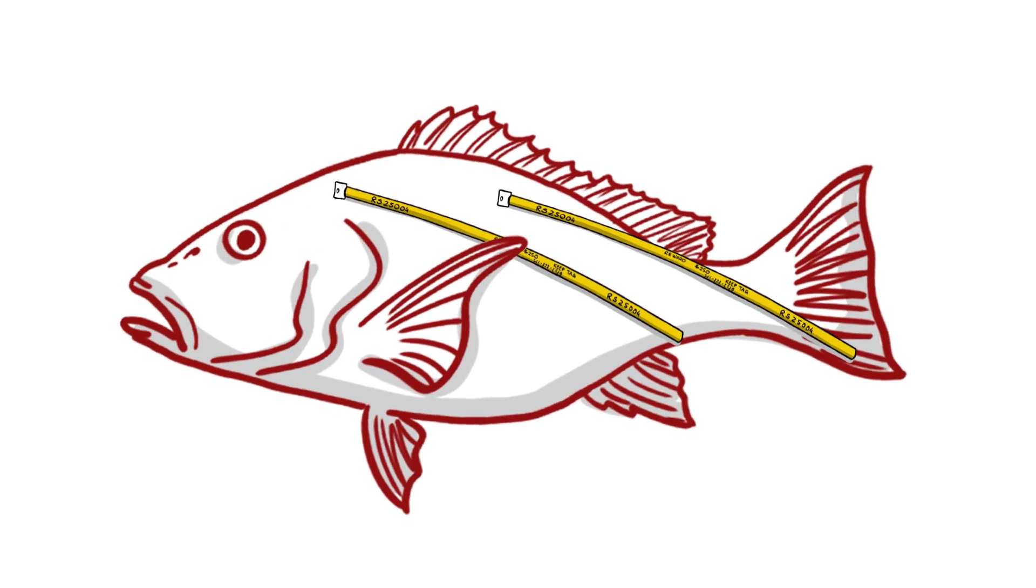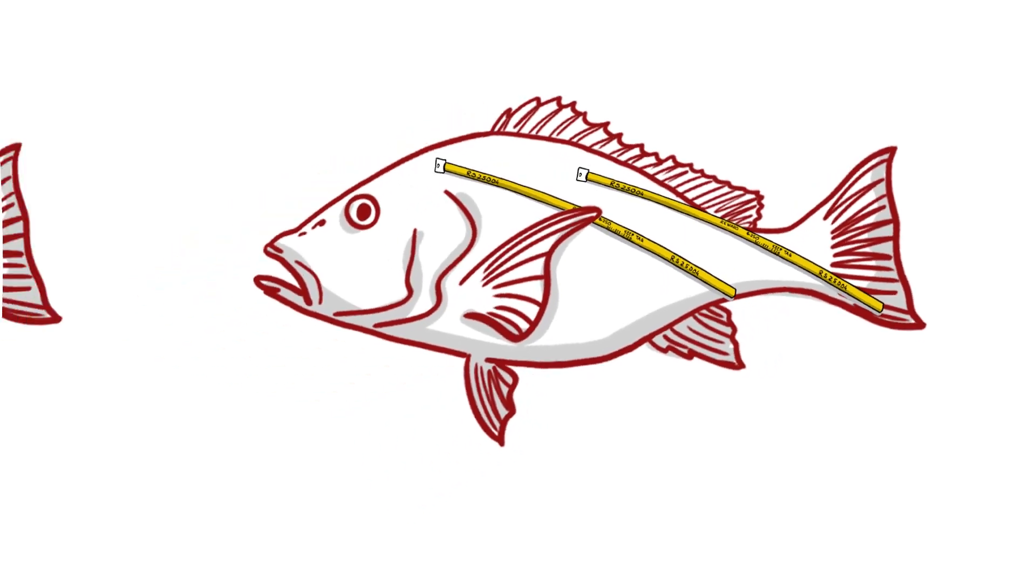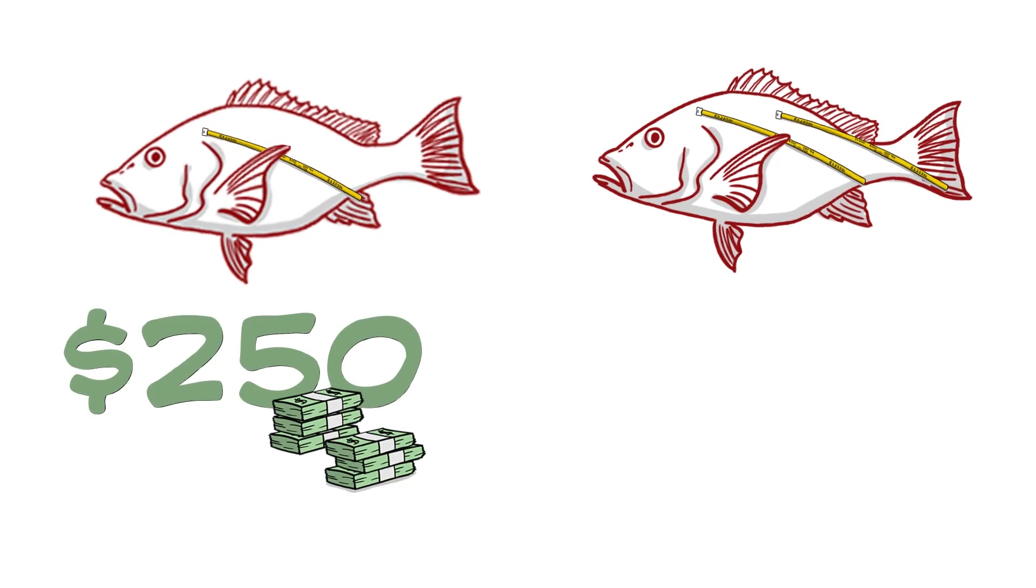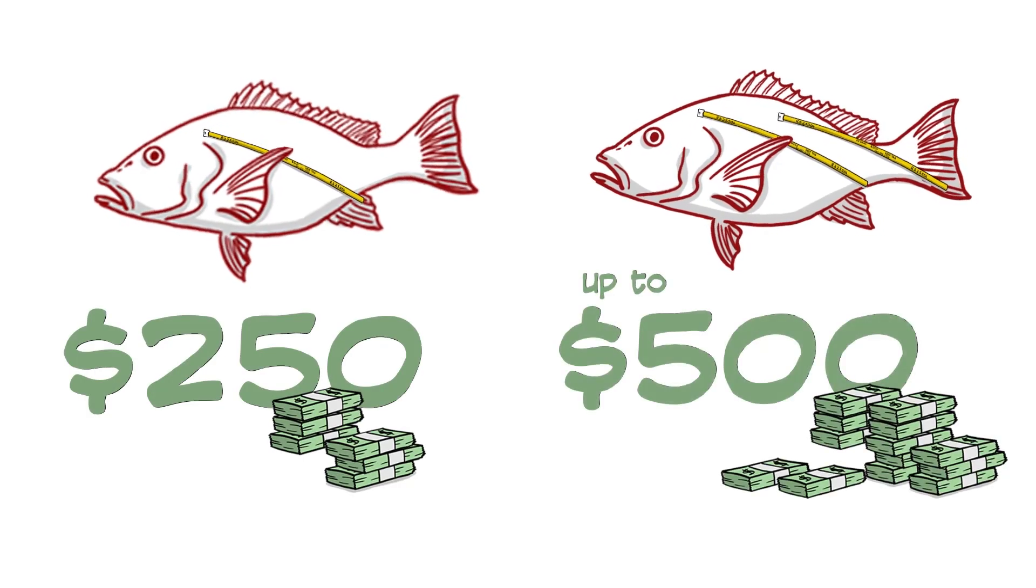Some fish will have two tags so that tag shedding rates can be estimated. Tags from recaptured fish will be worth $250 per fish. Some double-tagged fish may be worth up to $500.